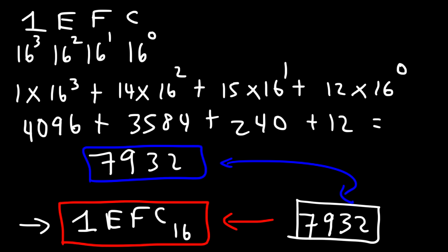So that's how you can check your work, which confirms this is the right answer. Now you know how to convert a binary number into a hexadecimal number, a binary number into a decimal number, and a hexadecimal number into a decimal number. Thanks for watching.